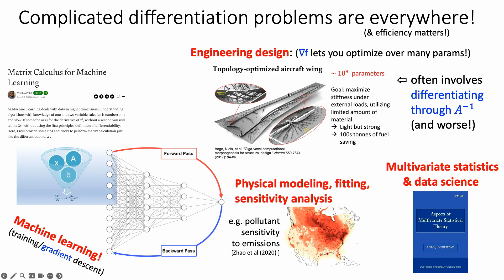Often you're differentiating through the solution of a huge system of equations describing the physics — carrying the chain rule precisely through A⁻¹. You see it in physical modeling, fitting, and sensitivity analysis: for example, a giant airflow model of pollution where you want the sensitivity of pollution to emissions at every point in North America. You see it in multivariate statistics and data science — two talks today involved optimizing functions with a log determinant of a matrix.